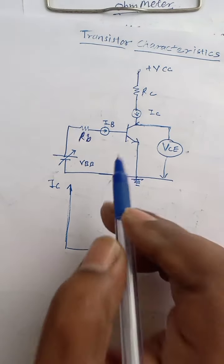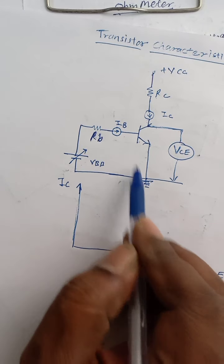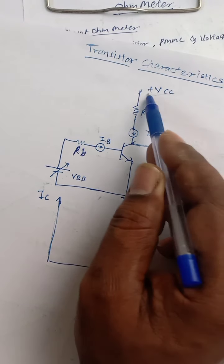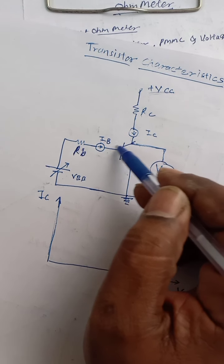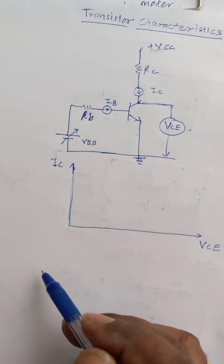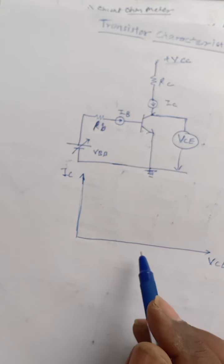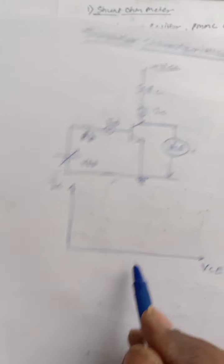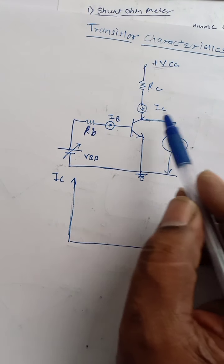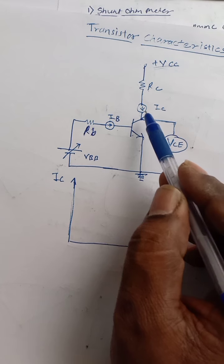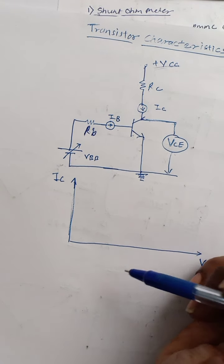We are going to observe the variation between the current and voltages of a transistor. We apply a base-to-emitter voltage so that it forward biases the base-to-emitter junction, and VCC is the voltage applied to the collector so that because of the high voltage VCC it reverse biases the base-to-collector junction. We are going to vary the voltage VCC from 0 to maximum and observe the relation between collector current and the collector-to-emitter voltage VCE.